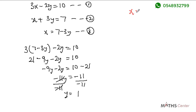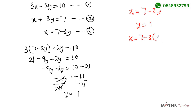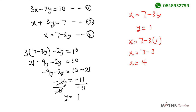We already made x the subject in equation 3. We now have the value of y. From equation 3 we know that x equals 7 minus 3y. We have just found out that y equals 1, so we substitute y equals 1 into this equation. We get x equals 7 minus 3 times 1, which gives x equals 7 minus 3 equals 4. So x equals 4 and y equals 1.